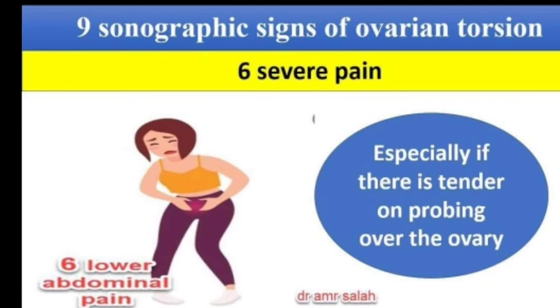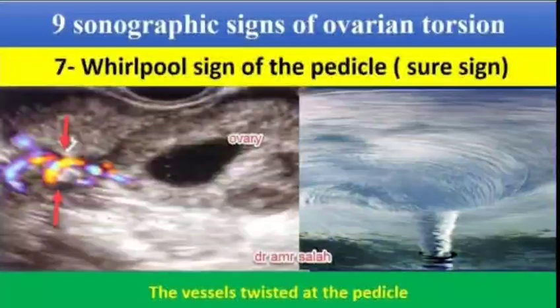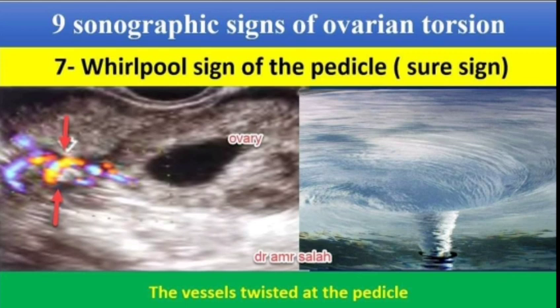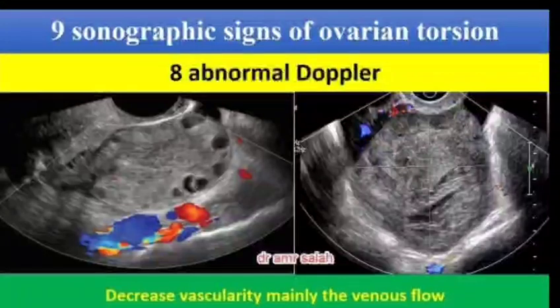Sign number 6: The patient will complain about probe tenderness while scanning. Sign number 7: Also called the whirlpool sign of the pedicle, or surge sign — the vessel is twisted at the pedicles.